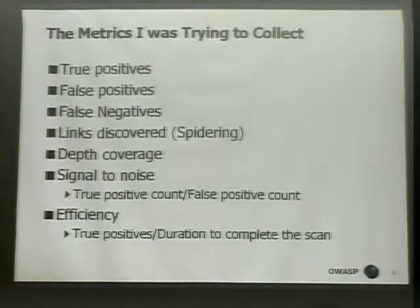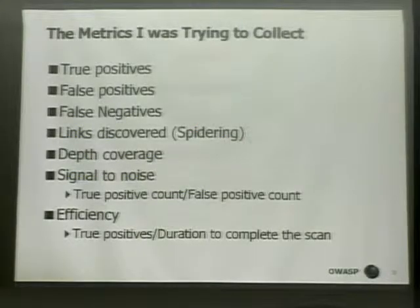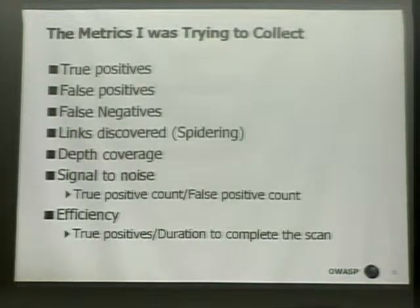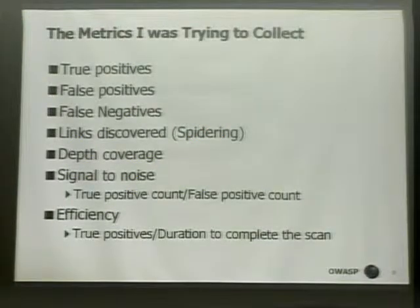These are the metrics I'm trying to collect when I run the scan. I want to know the true positives, which are actual real vulnerabilities, and the false positives. False negatives, if I could figure them out, depending on the application — sometimes one scanner will find something and the other won't, and then you verify it and you know it's a false negative. That's the biggest gray area, because there may be vulnerabilities that nobody knows about. Links discovered is just basic spidering — how many links did the spider discover as it crawled through the application.